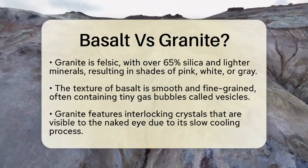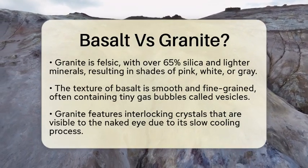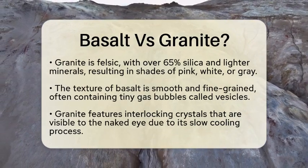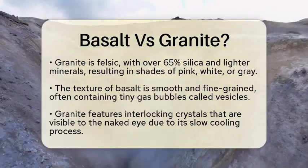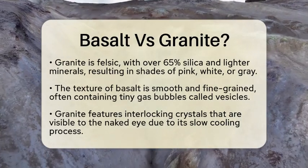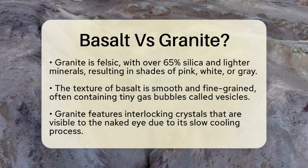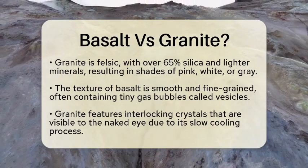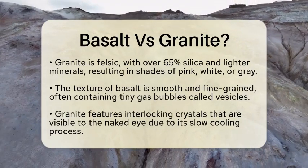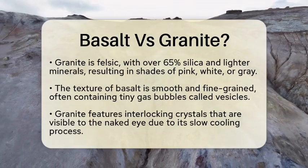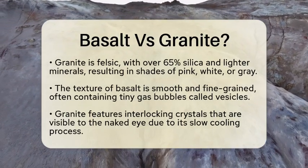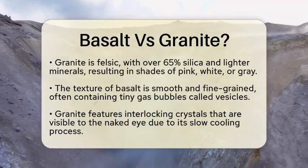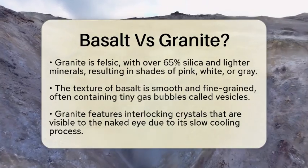When it comes to texture and appearance, basalt has a smooth, fine-grained texture, often featuring tiny gas bubbles called vesicles. These bubbles form when volcanic gases get trapped as the lava cools. Granite, however, showcases interlocking crystals that are easily visible to the naked eye, reflecting its slow cooling process.